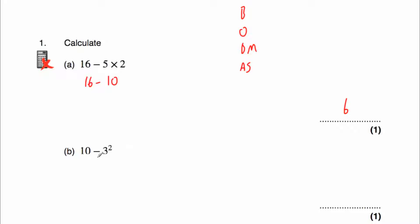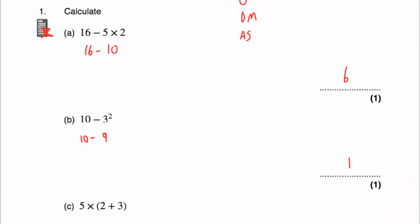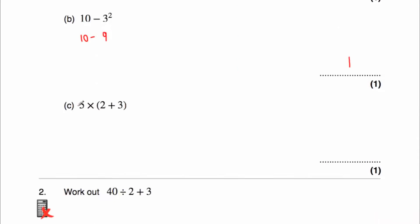Question b says: work out 10 take away 3 squared. We don't have any brackets, but we do have an order — we have 3 squared. So 3 squared is 9. Then we've got 10 take away 9, which is 1. So our answer is 1, doing 3 squared first and then 10 take away 9.